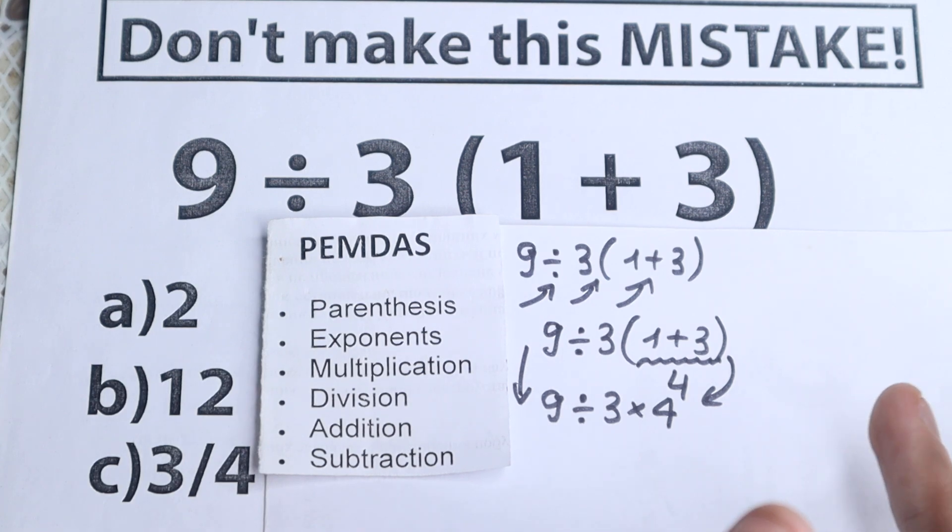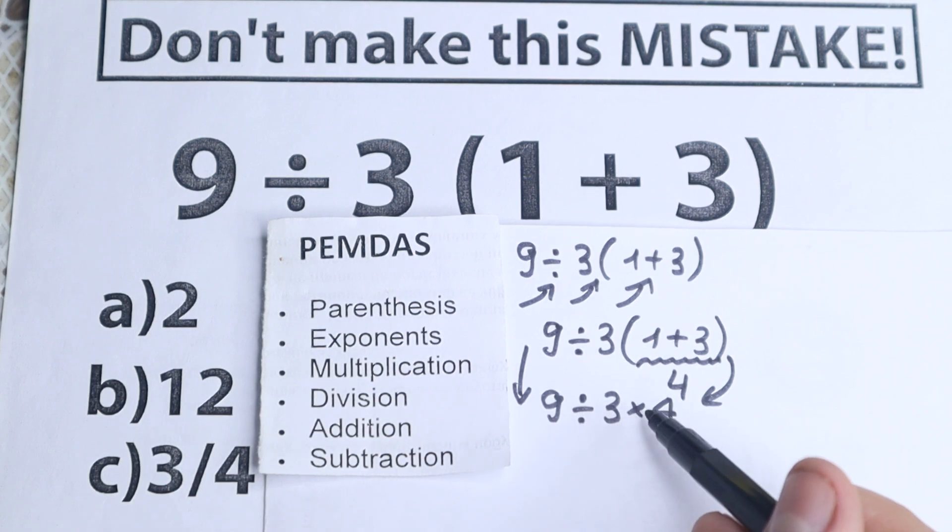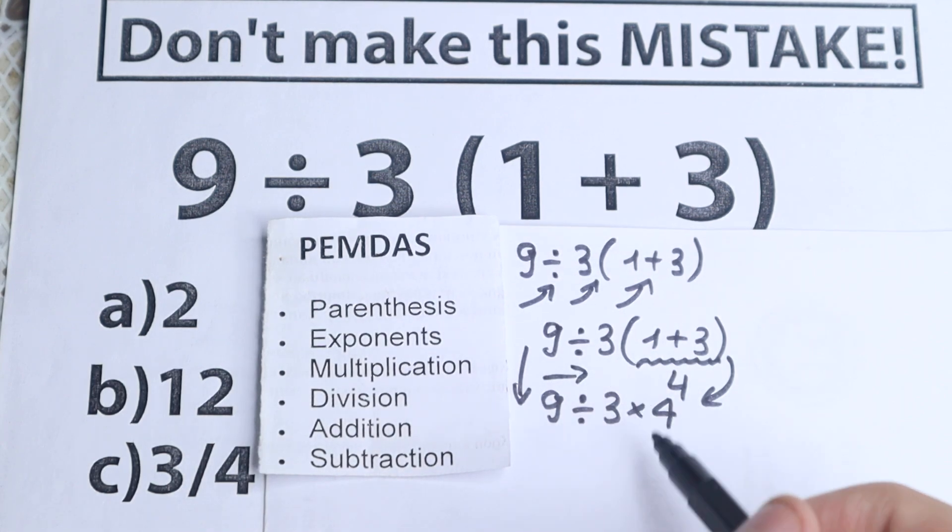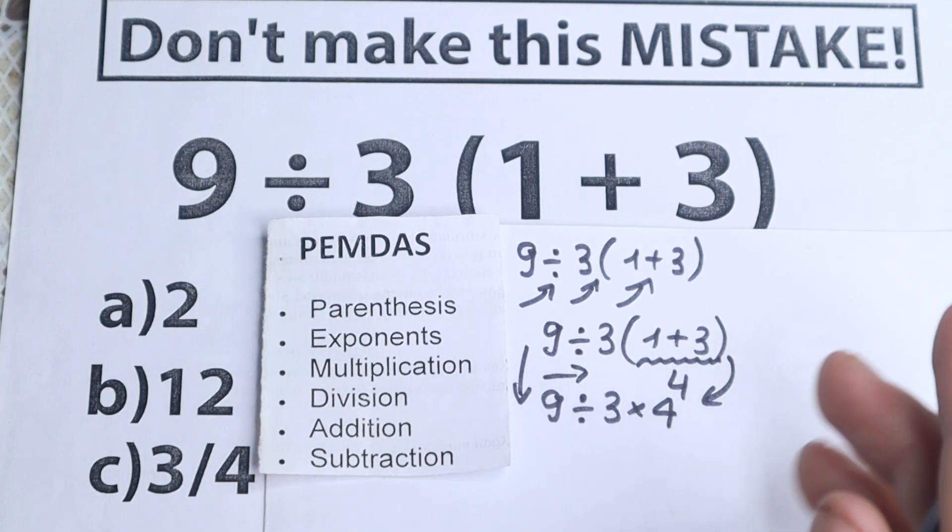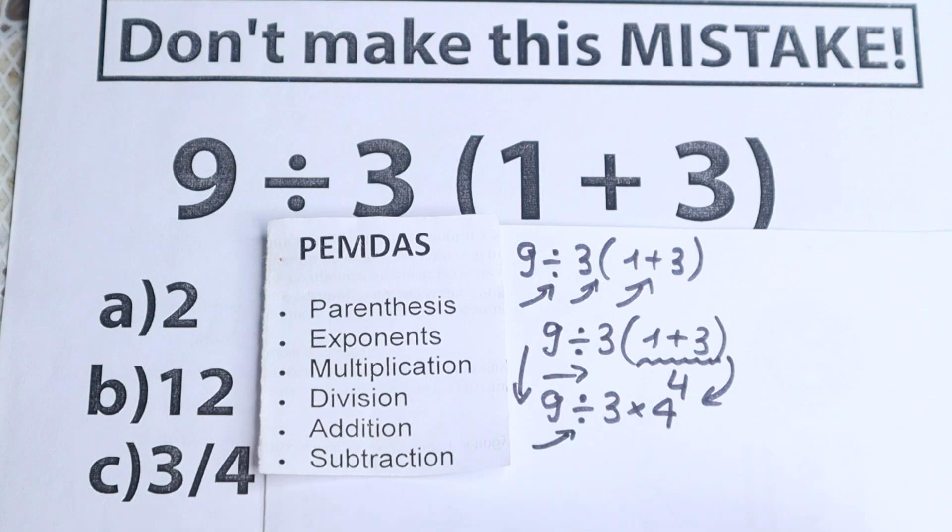Now we need to scan: are there any multiplication and division signs in our expression? In our case, we have division and multiplication signs. According to PEMDAS, we work from left to right. We need to scan what is the first sign from left to right. The first sign from left to right is this division.